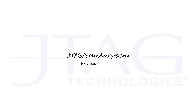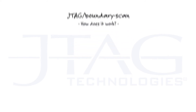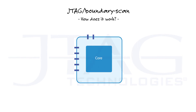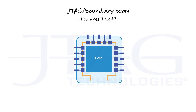JTAG boundary scan — how does it work? We can reach all the pins of a chip through its boundary scan register. With the serial data input pin, called TDI (test data in), and the serial data output pin, called TDO (test data out), we can read the boundary scan register.